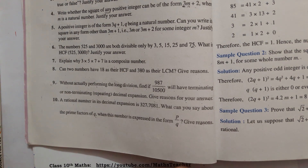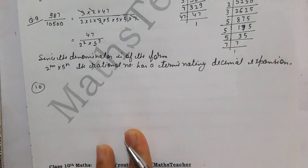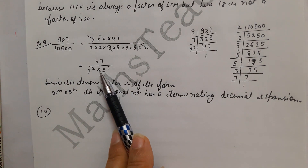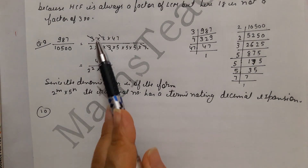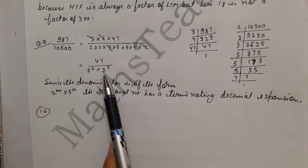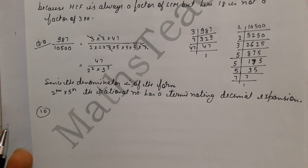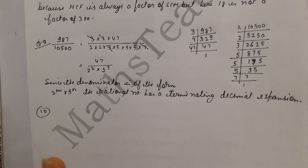When it is terminating, the denominator Q is in the form 2 power M and 5 power N. Now here, without dividing, you have to tell whether it is a terminating or non-terminating decimal expansion. So in the denominator, when you make the factors, only 2 and 5 appear in P upon Q form — so it is a terminating decimal expansion.